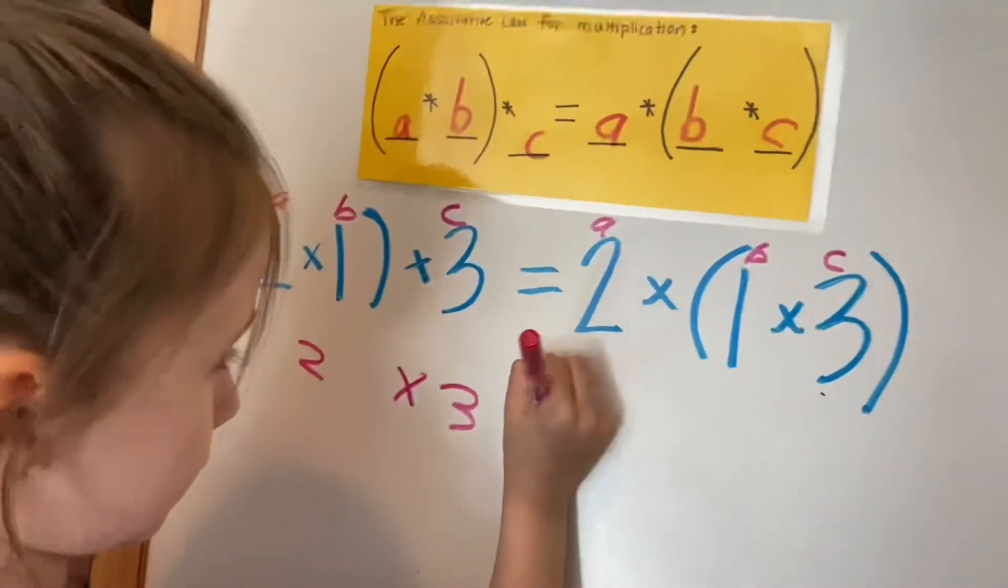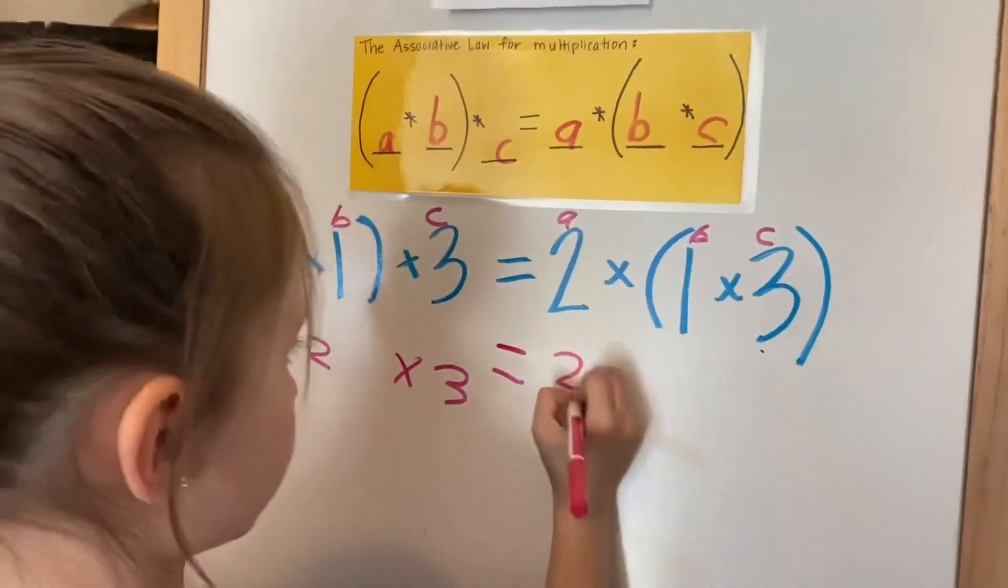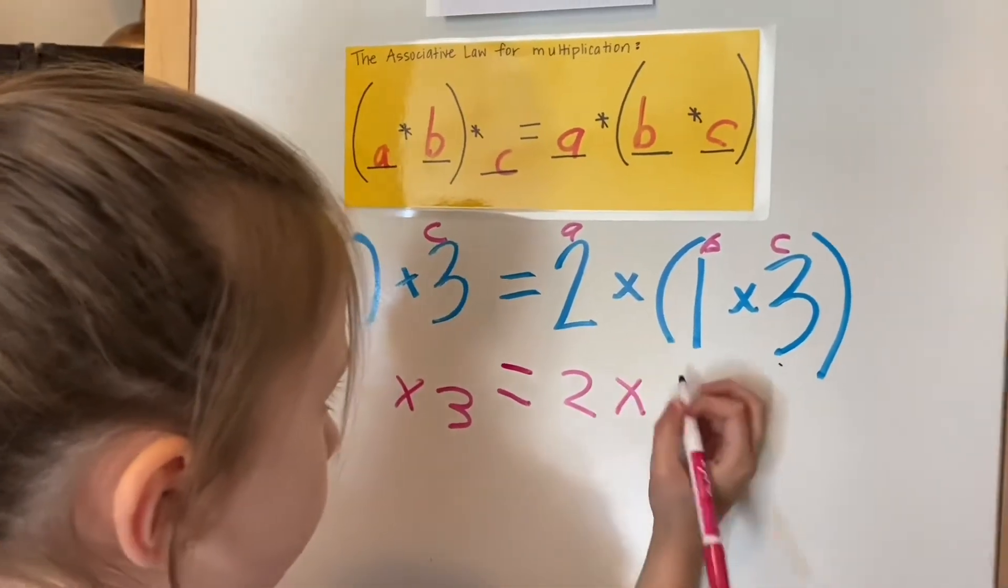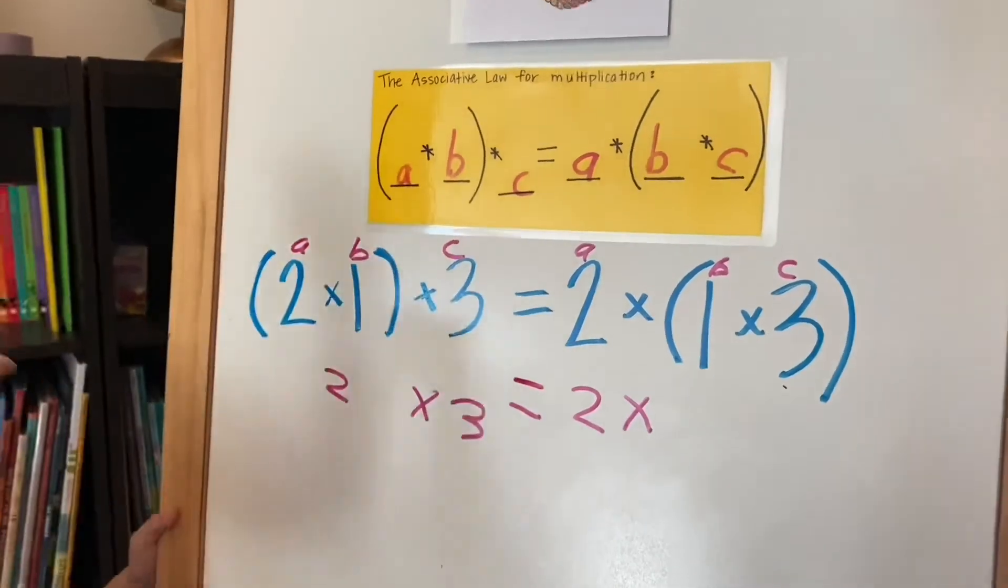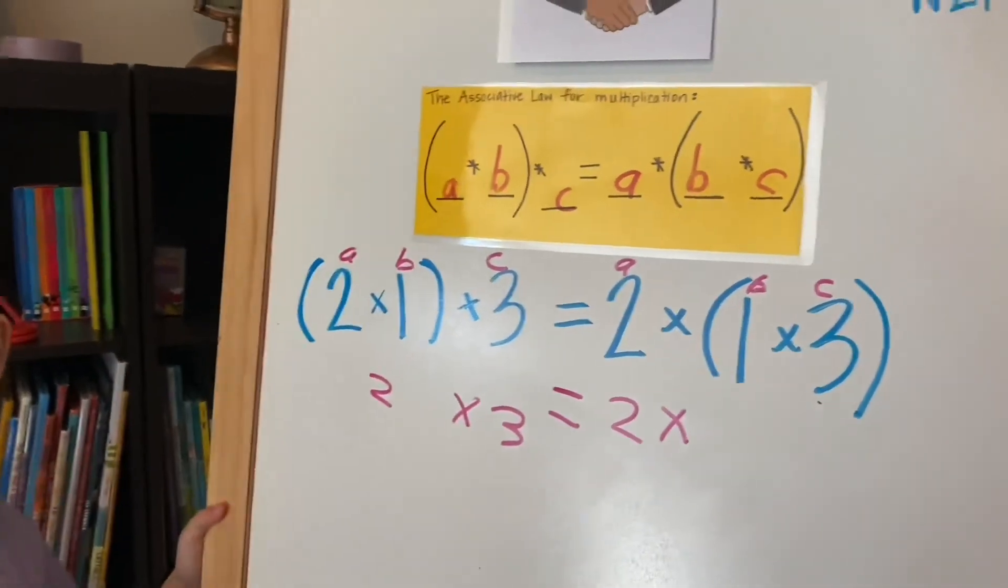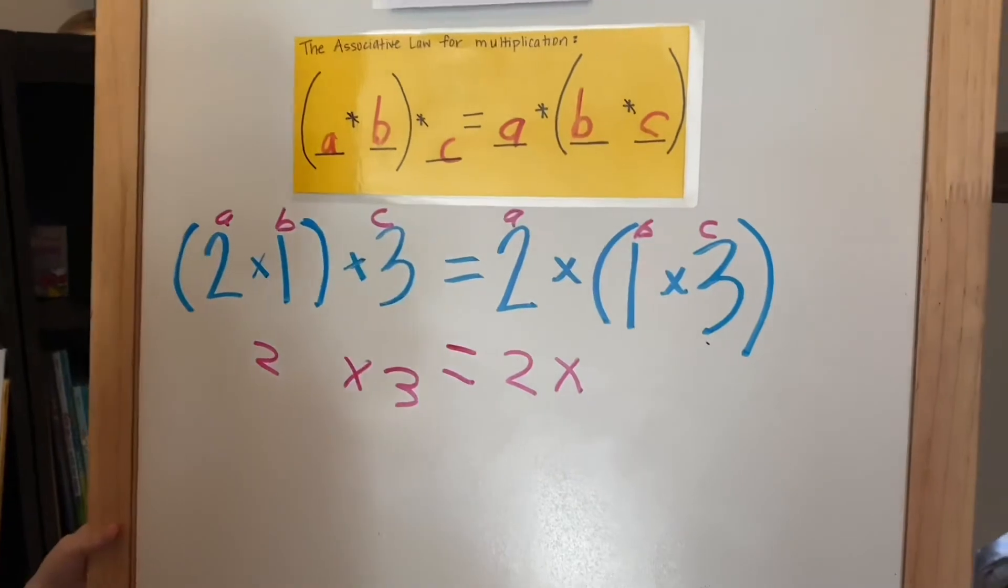Bring down the 2. Now what is 1 times 3? 3, very good.